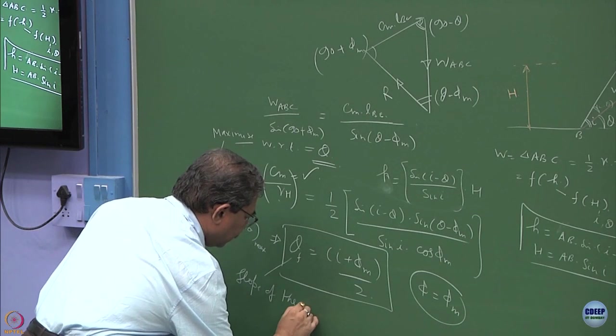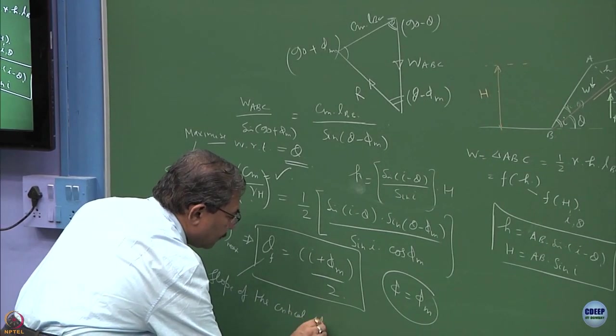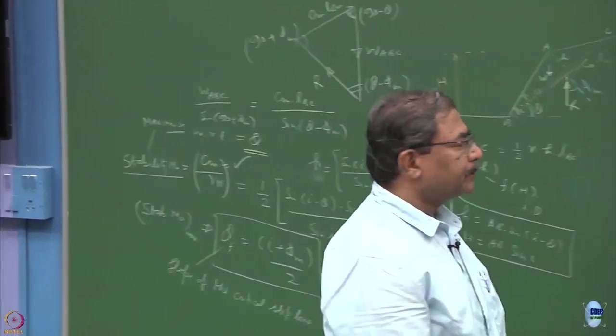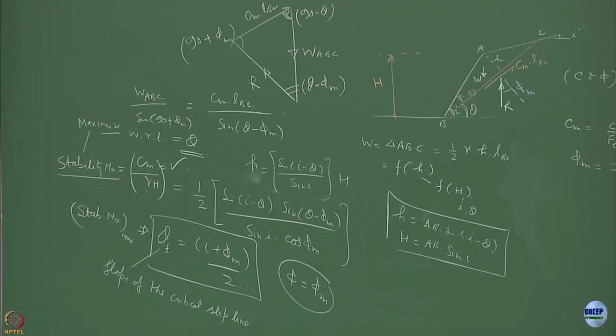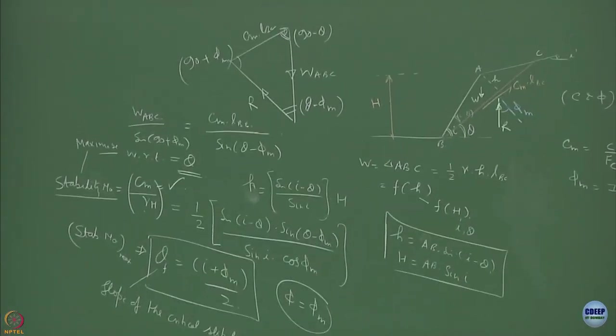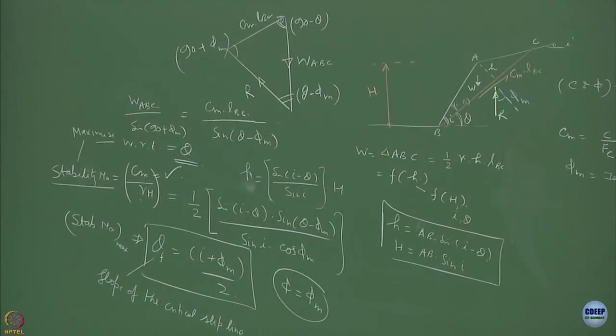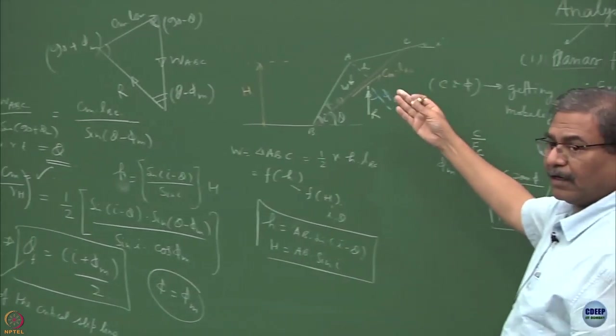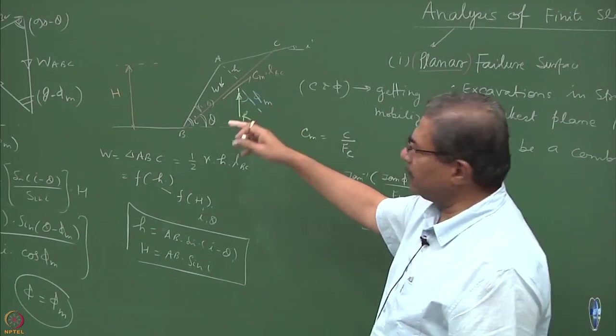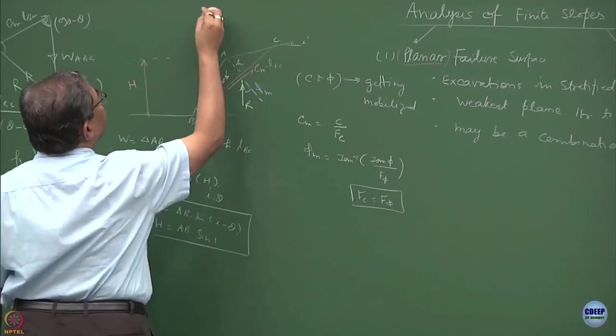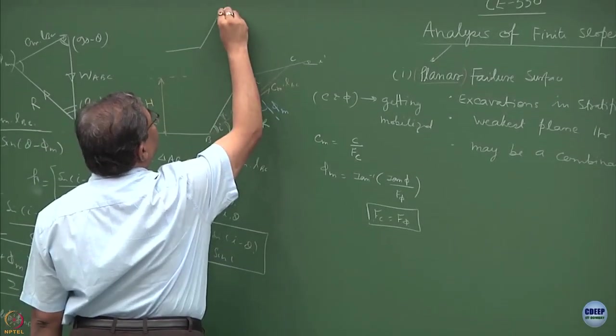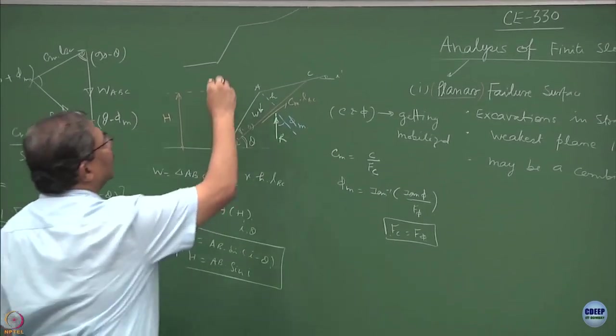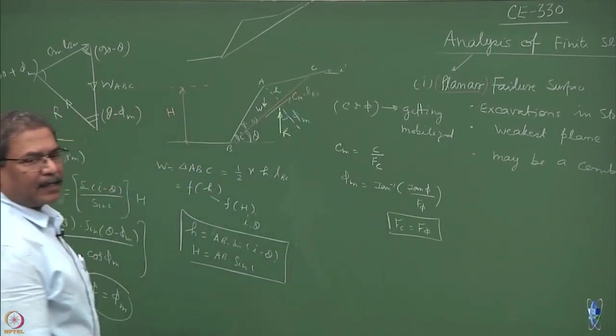So theta f is the slope of the critical failure surface or critical slip line. It is basically a geometrical manipulation which has been used to obtain the stability number here. I might be having different types of combinations of the planar surface. So here this is one. I can create a situation where you have a slope like this which again goes further and so on. This could be the typical critical surface.